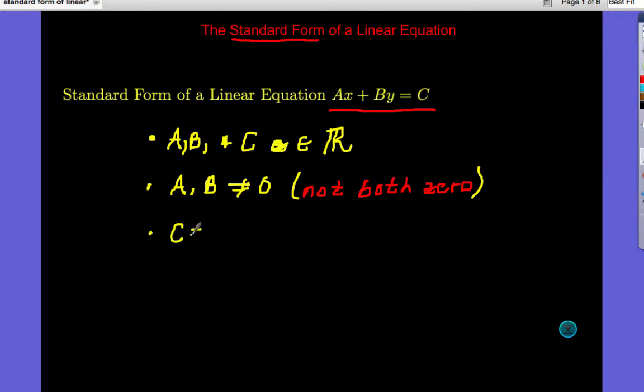We also know that C is going to be our constant, so there's no variable attached to that C value. And one thing we're going to use in our next video, we graph most of these Standard Form equations using X and Y-intercepts. We'll talk about that in the next video. So that's Standard Form.